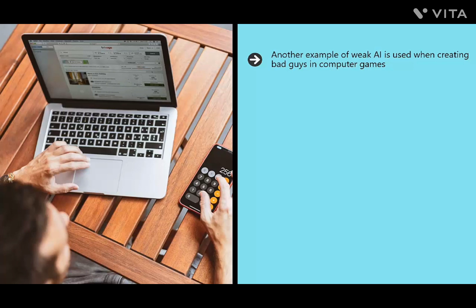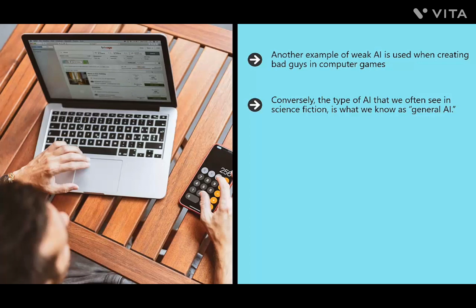Weak AI might not sound exciting, but it is being used for a huge range of things — from helping to treat disease to improving the economy. Conversely, the type of AI we often see in science fiction is general AI — AI that doesn't have just one purpose but is designed to do everything a human might do. You can play a word game with it, ask it how it's feeling, or get it to look something up.